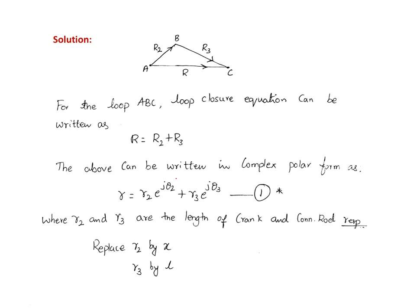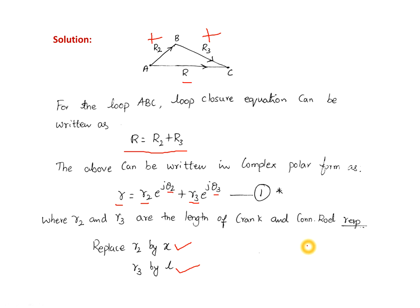Since the piston moves horizontally, theta equals zero and e to the power of j·0 equals 1, so no exponential component appears for the first term. Applying Euler's equation — replacing e to the power of j·theta with cos theta plus j·sin theta — and separating real and imaginary parts gives: real part: r = x·cos(theta2) + L·cos(theta3); imaginary part: 0 = x·sin(theta2) + L·sin(theta3).